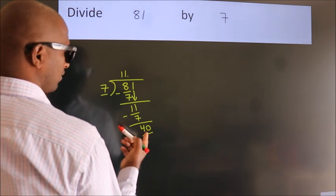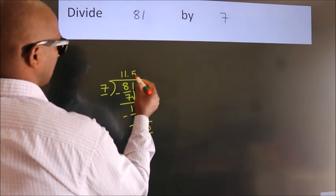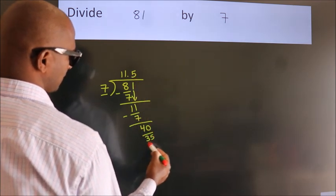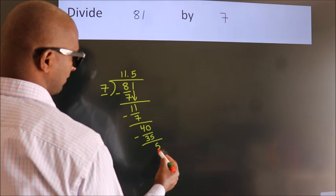A number close to 40 in the 7 table is 7 fives, 35. Now, we subtract. We get 5.